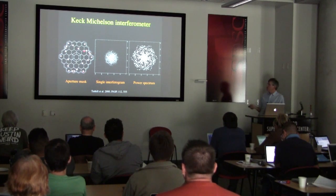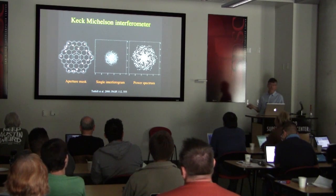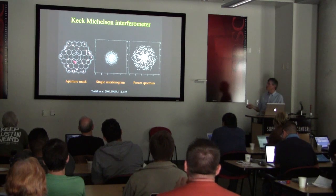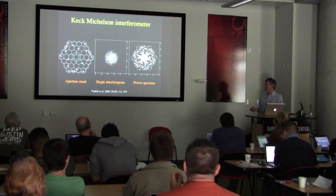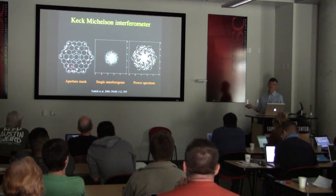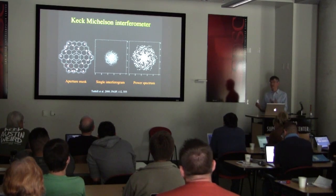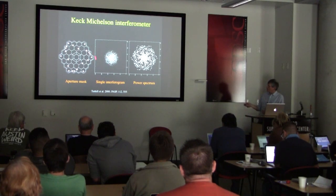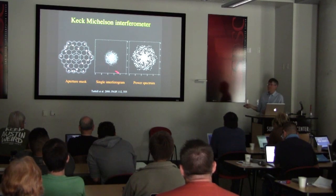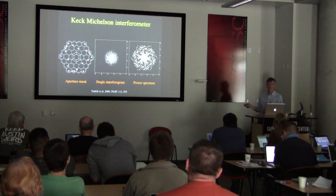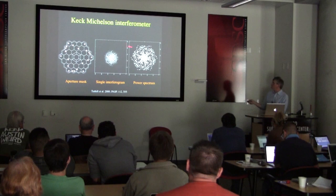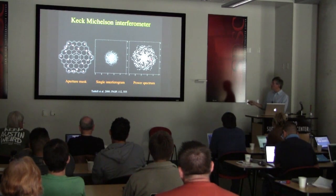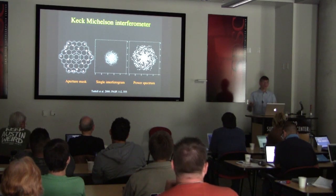Here's an interesting example: some people took a Keck 10-meter telescope on Mauna Kea and masked out all but small apertures to turn Keck into an optical interferometer. Though it seems crazy to use only tiny bits of a 10-meter mirror, this allows much higher resolution optical images. The interferogram looks fuzzy, but the power spectrum is extremely regularly spaced, filled by all the spacings between the aperture pairs, enabling much higher resolution observations.